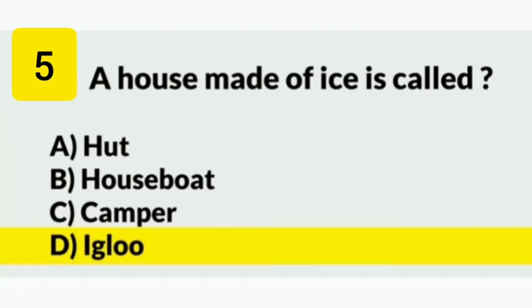Number 5. A house made of ice is called what? Answer is option D: Igloo.